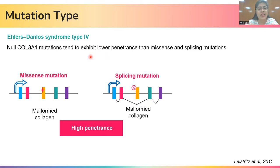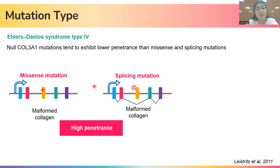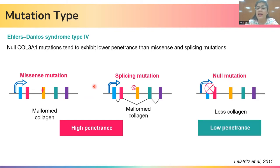The first example is mutation type, in the case of Ehlers-Danlos syndrome type 4. This syndrome is caused by mutation in the COL3A1 gene that makes collagen 3 protein. If the mutation is a missense or splicing mutation, then a faulty gene product is formed that disrupts the entire triple helical structure of the collagen molecule. Whereas if there is a null mutation, the amount of normal collagen that will be formed will simply be reduced. Therefore, the penetrance of the disease is high in case of missense and splicing variations.